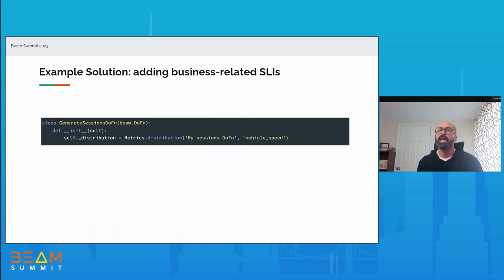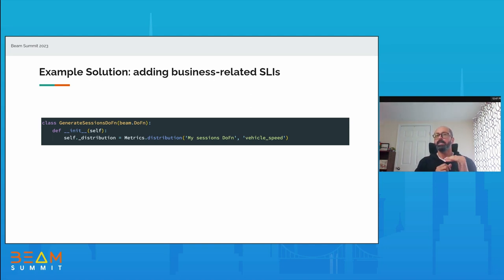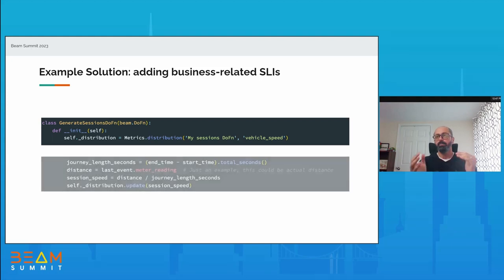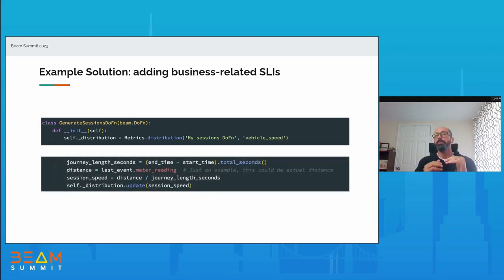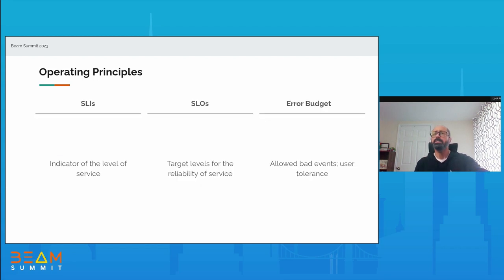This is the example of a business-related SLI using a distribution metric. Here in our DoFn we are initializing the distribution metric, taking the example of vehicle speed. At the bottom you can see how we are calculating it in our business logic function used to calculate session — we are updating that distribution metric with the session speed. So every session, we are calculating the vehicle speed. That was a quick overview of the example implementation.